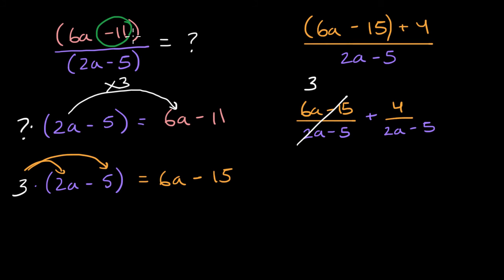So we could say that our original question, what is 6a minus 11 divided by 2a minus five, we could say that this is the same thing as three plus four over (2a - 5).